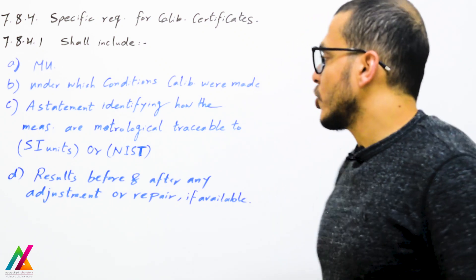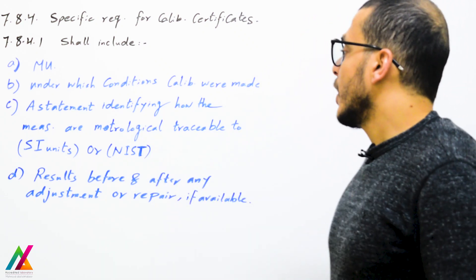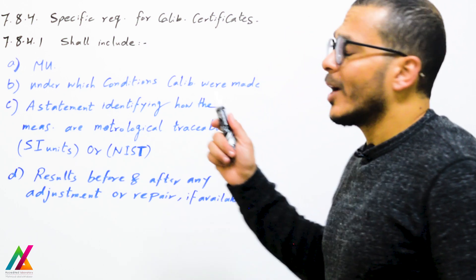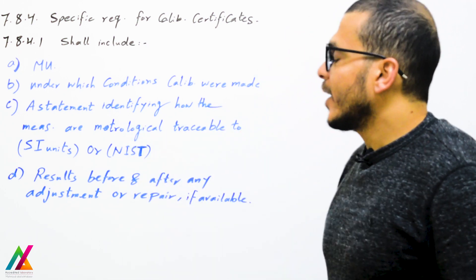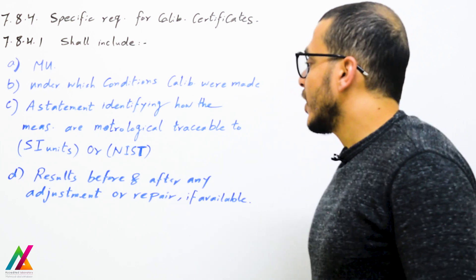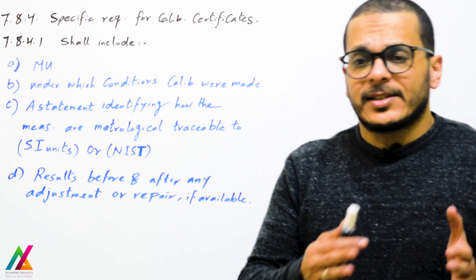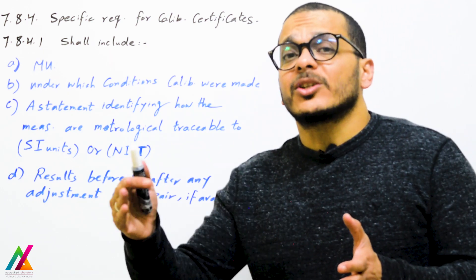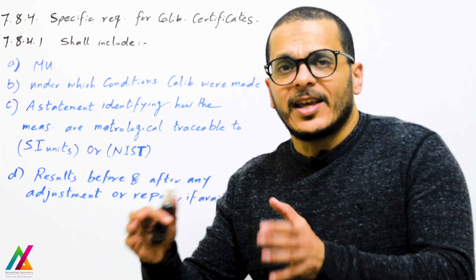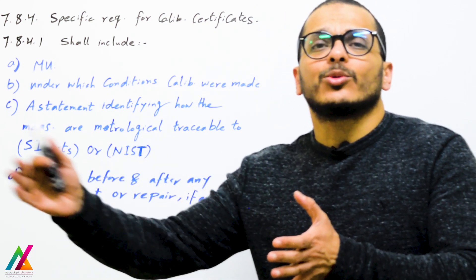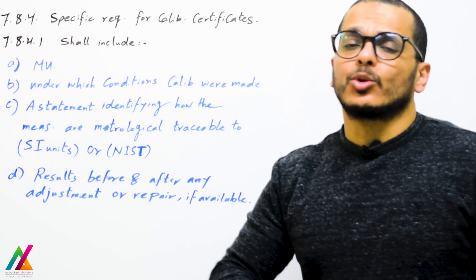Metrological traceability for results shall also be included in the calibration certificate — a statement identifying how the measurements are metrologically traceable to SI units, the International System of Units, or to NIST, the National Institute of Standards and Technology. You can write that values were traceable to national standards, and that national standard is in turn traceable to SI units.